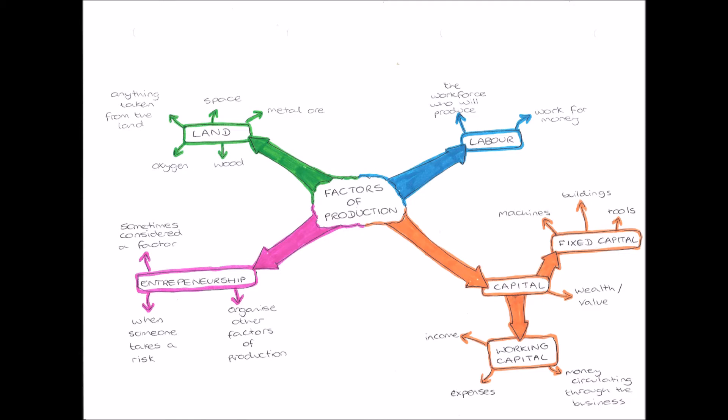Next we have capital, and capital means wealth or value. We have two types of it: fixed capital or physical capital, so physical wealth and value, and working capital, so working moving wealth and value. Firstly, fixed or physical capital includes any physical good which assists us in producing a good, so things like machines, buildings, and tools.